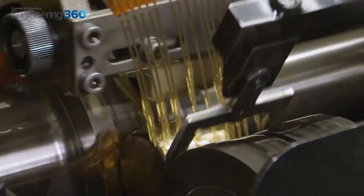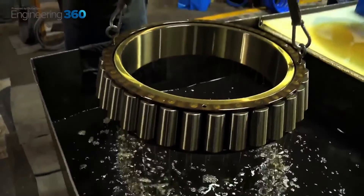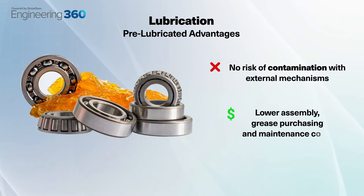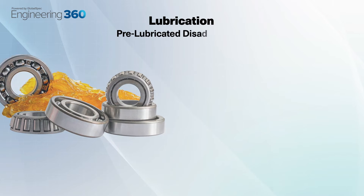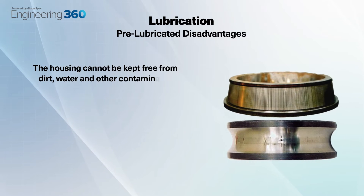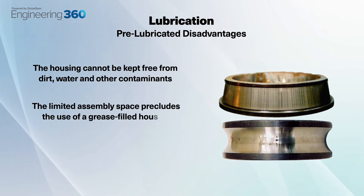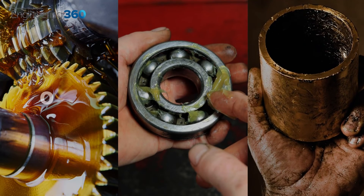Many bearings are pre-lubricated with grease by the manufacturer, and this can present a couple of advantages. There is no risk of contamination with external mechanisms, and there are lower assembly, grease purchasing and maintenance costs. But with pre-lubricated bearings, the housing cannot be kept free from dirt, water or other contaminants. The limited assembly space precludes the use of a grease-filled housing, and any re-lubrication with external lubricators is just not feasible.